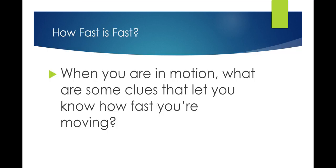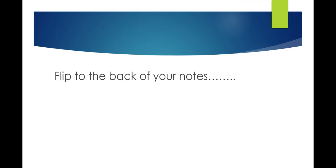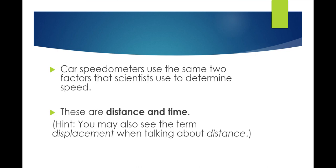We're investigating velocity and distance. When you're in motion, what are some clues that let you know how fast you're moving? When you're in a car and not the driver, you see the road going by during a certain amount of time. If you're the driver, a clue is looking at the speedometer. Car speedometers use the same two factors that scientists use to determine speed.